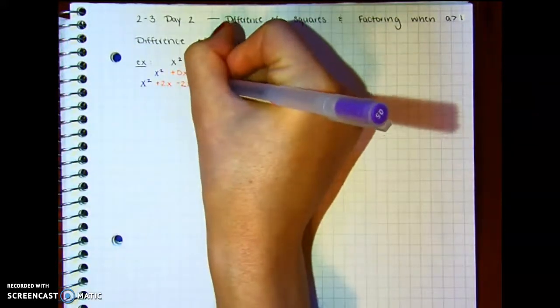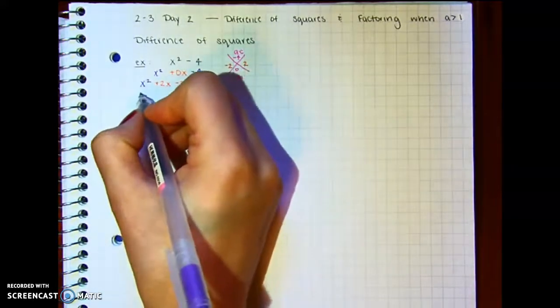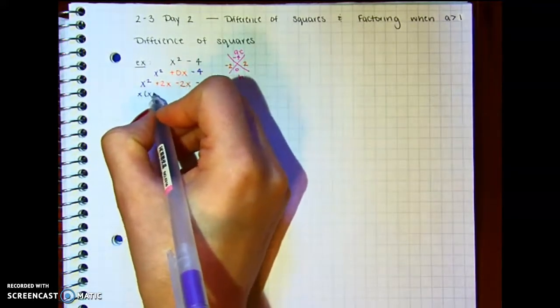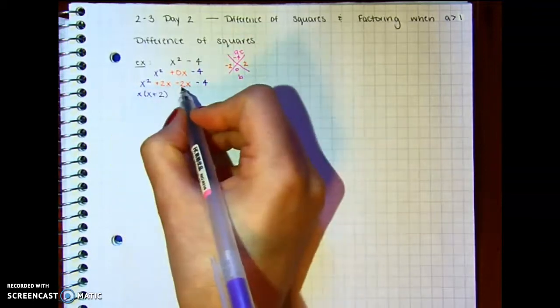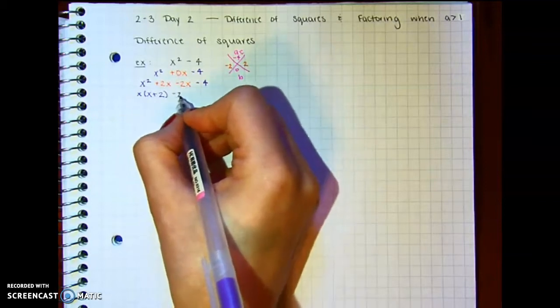Bring down my negative 4 and I'm going to factor out the greatest common factors. The greatest common factor here is x. And I'm left with x plus 2. The greatest common factor here, remember we don't want that leading term to be negative, so it's going to be negative 2.